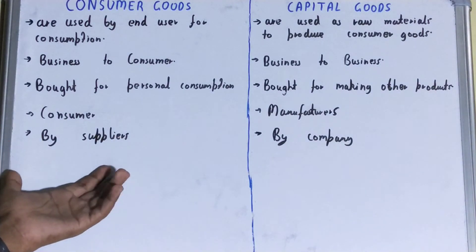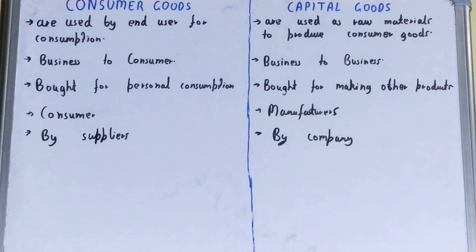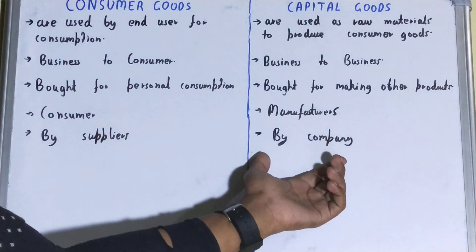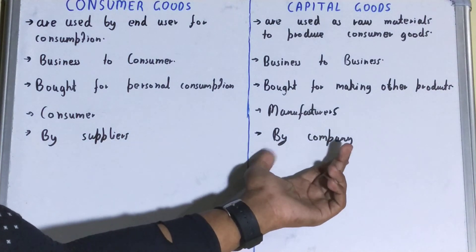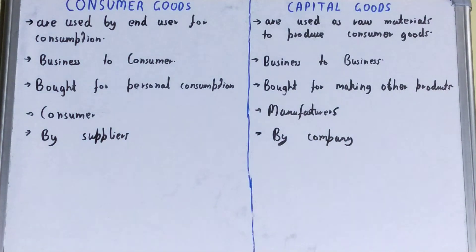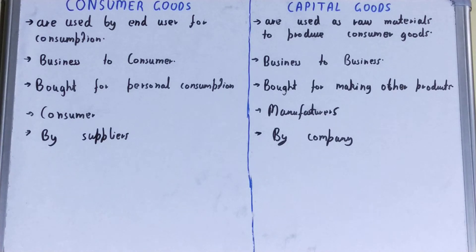And if we talk about price determination, in the case of consumer goods the price is determined by the supplier who supplies goods to the end user. But in the case of capital goods, the price determination is done by the company who provides the goods to the manufacturers. So this was all about the difference between consumer goods and capital goods.